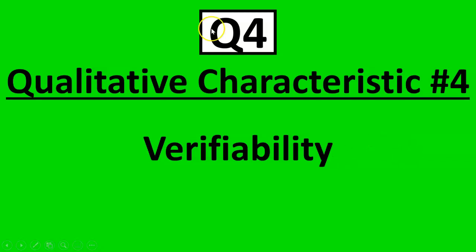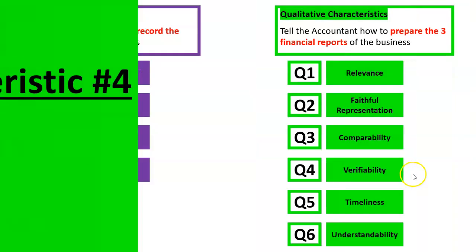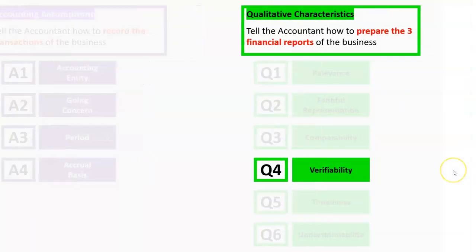Qualitative characteristic number 4, Q4, is verifiability. What's that about? Well, that one is all about proof.